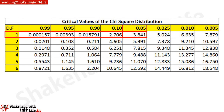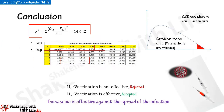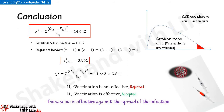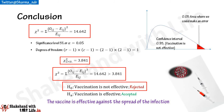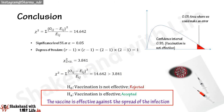This is the critical value of chi-square at 5% significance level. Comparing the calculated chi-square of 14.642 with the critical value of 3.841, we find that 14.642 is much greater than 3.841. Because the calculated chi-square exceeds the critical value, we reject the null hypothesis that the vaccine is not effective. We therefore conclude that the vaccine is effective against the spread of the infection.